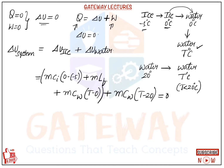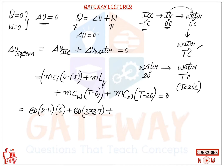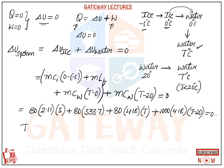Setting the total equal to zero: 80 × 2.11 × 5 + 80 × 333.7 + 80 × 4.18 × T + 1000 × 4.18 × (T − 20) = 0. By calculation, the final equilibrium temperature T = 12.42°C.